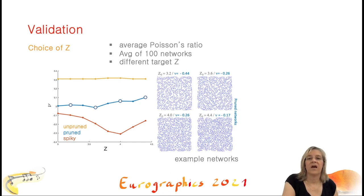This slide shows a larger statistical validation of our method, where we vary the target Z value. The goal here was also to search for possible optimal Z values. Each point in the graph corresponds to the mean Poisson's ratio of 100 networks. The yellow line corresponds to the input networks, the blue line to the pruned networks with the given target Z value, and the red line with the corresponding spiky networks. We can see that the lowest mean Poisson's ratio is reached for a target Z value of 4. On the right, we see some examples of networks having these different target Z values. The smaller Z is, the sparser is the network, but the sparsest networks are not necessarily most auxetic.